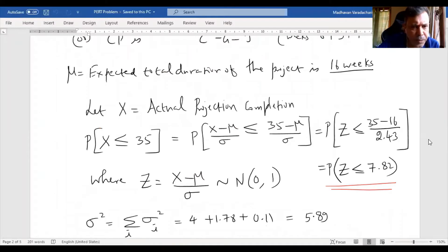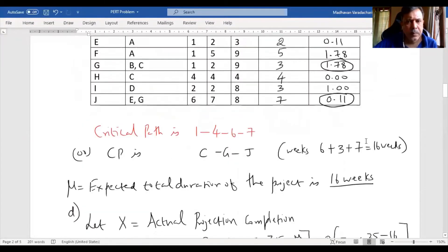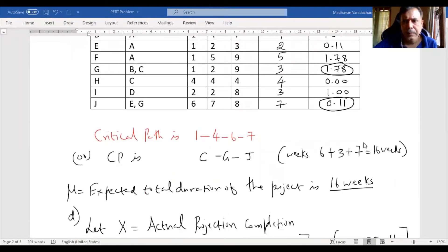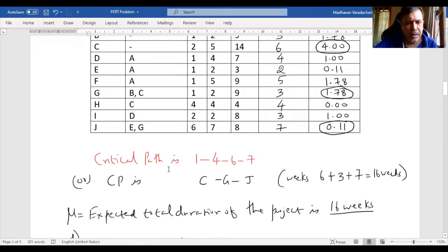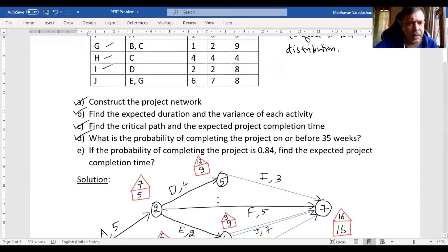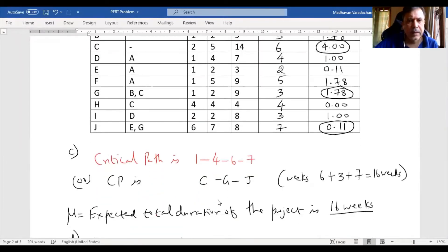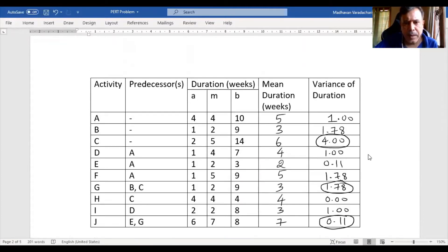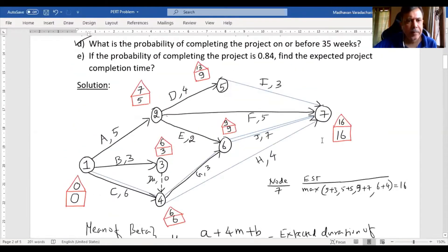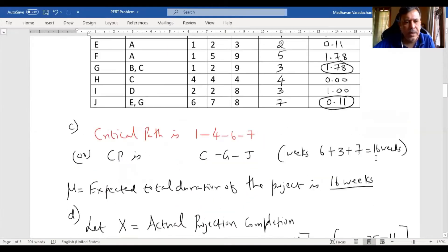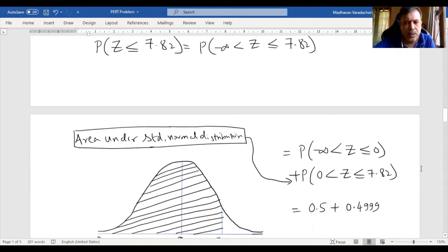This is actually our previous question. This critical path is question C. This mean and variance, these two together is our question B. And the network is our question A. So A, B, C and D previously done. Let us go to question E now.